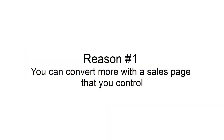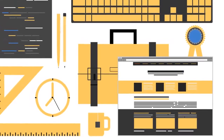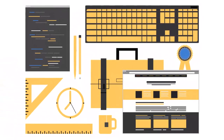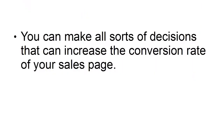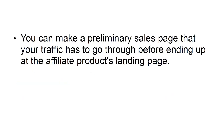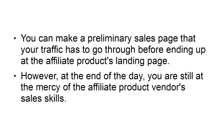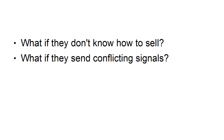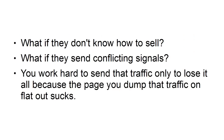Reason number 1: You can convert more with a sales page that you control. When you sell your own product, you are in full control of the sales page — you can focus on certain emotions, position the product in a certain way, and make decisions that increase your conversion rate. You don't have such power over a typical affiliate product sales page. You can make a preliminary sales page that your traffic goes through before reaching the affiliate product's landing page, but at the end of the day you are still at the mercy of the affiliate product vendor's sales skills.